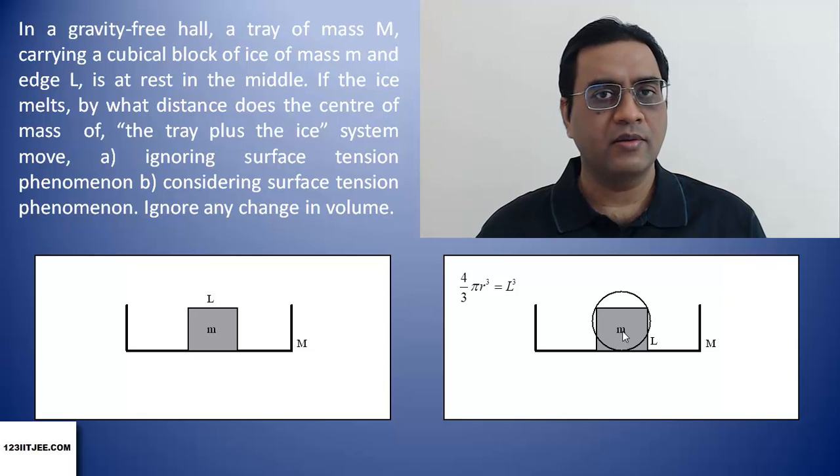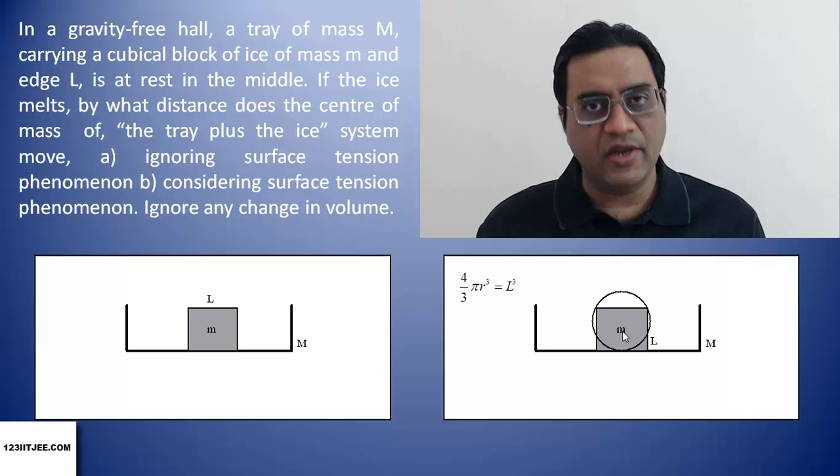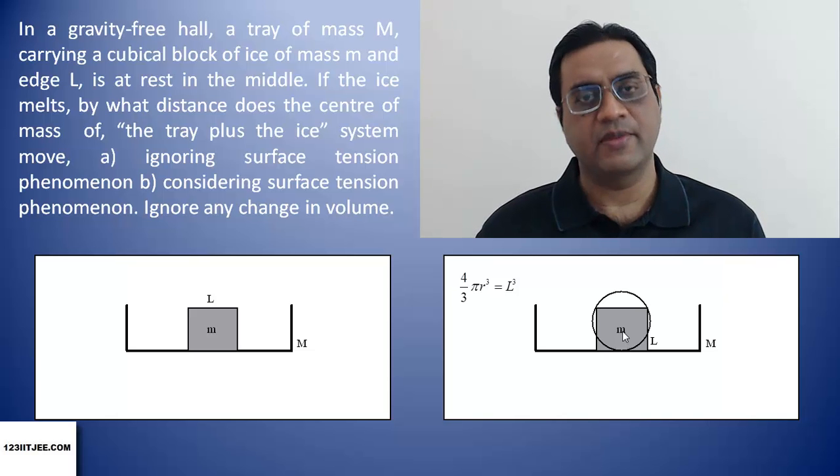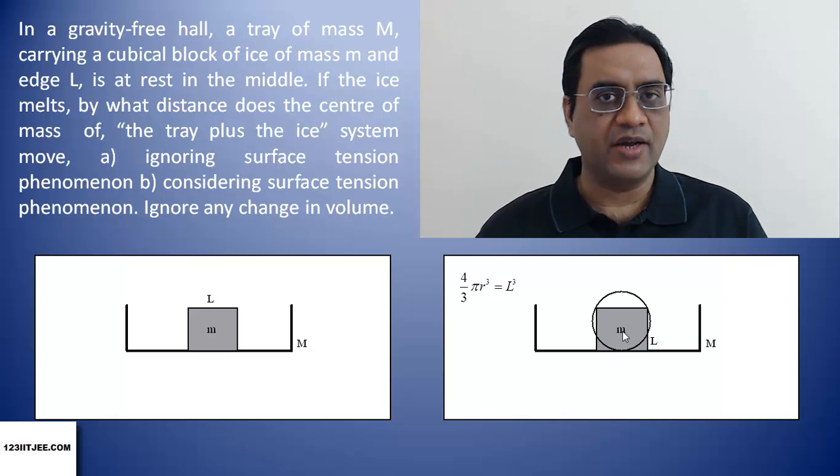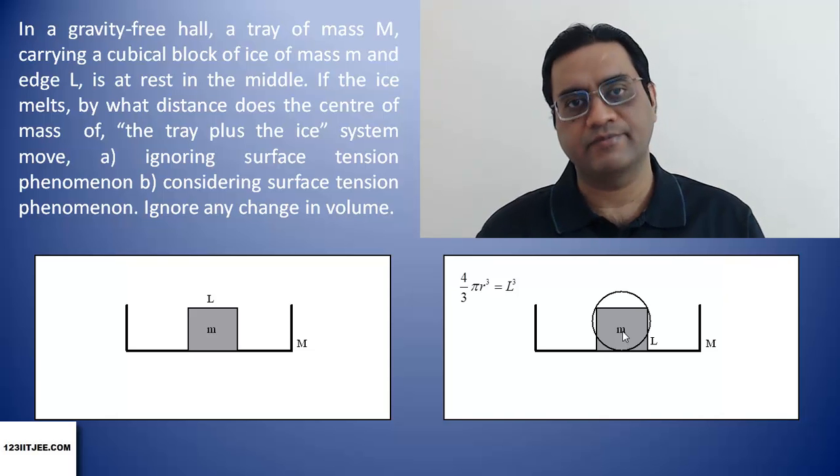So, the cubical block would become spherical and the whole thing will come down along with the tray, keeping the center of mass's position unchanged for the combined system.